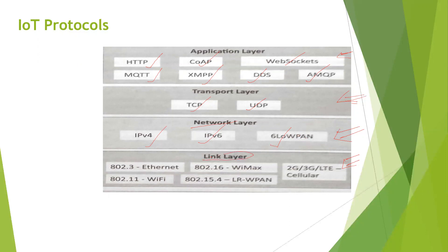In the link layer, we have Ethernet, Wi-Fi, WiMAX, LRWPAN, and cellular networks — that is 3G/LTE. So layer to layer, there are protocols present and each protocol can be followed using a particular application. That is the art of IoT — IoT is a user-specified design.